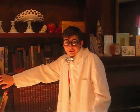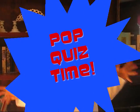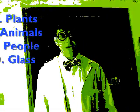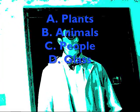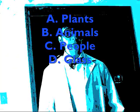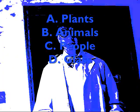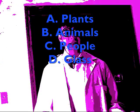Okay, kids. I hope you've been listening, cause it's pop quiz time! What is not composed of cells? A. Plants. B. Animals. C. People. Or D. Glass.